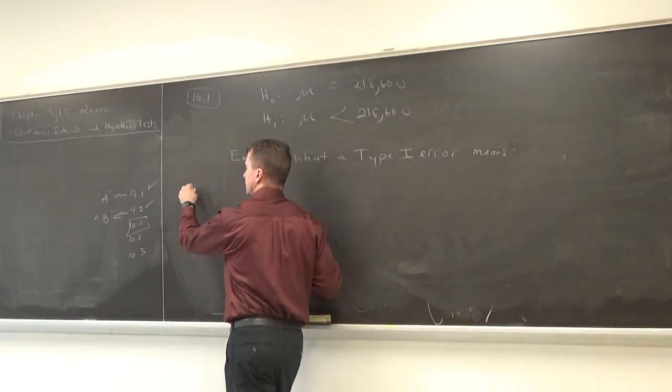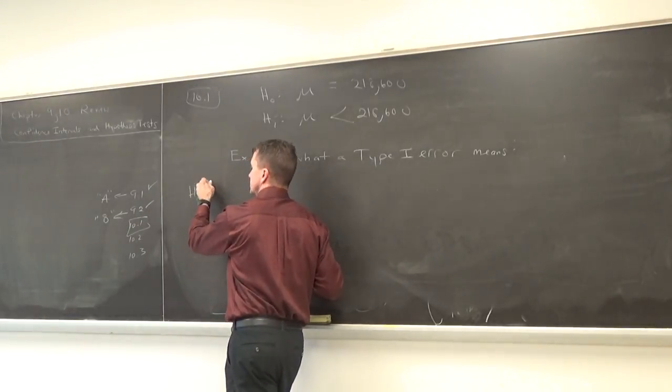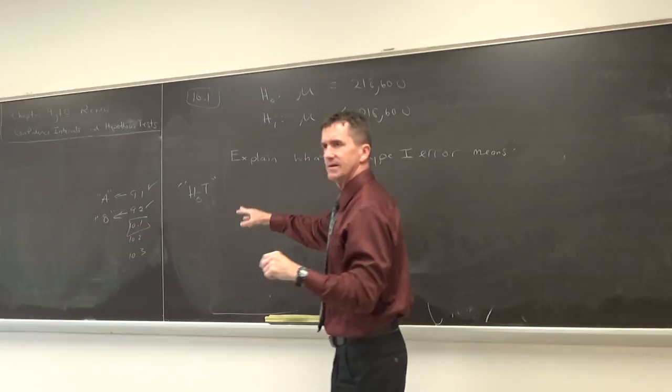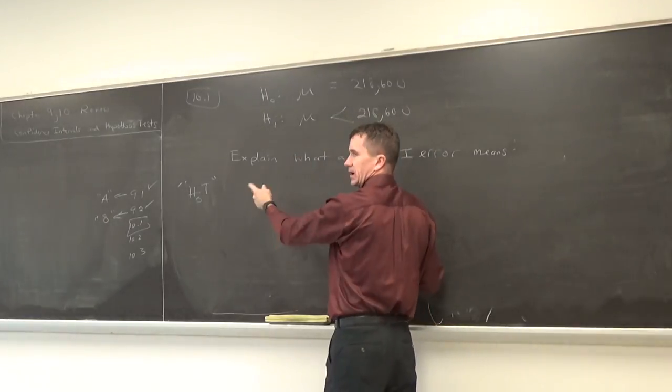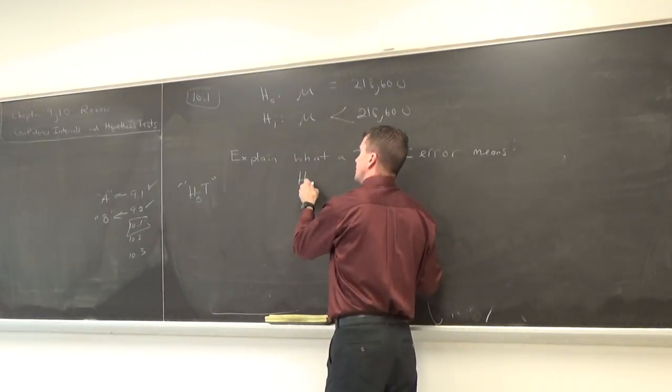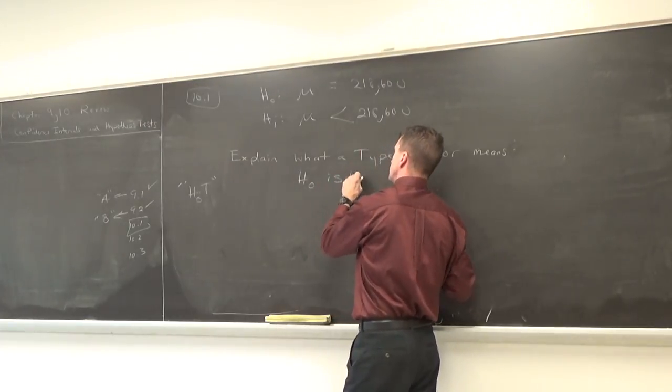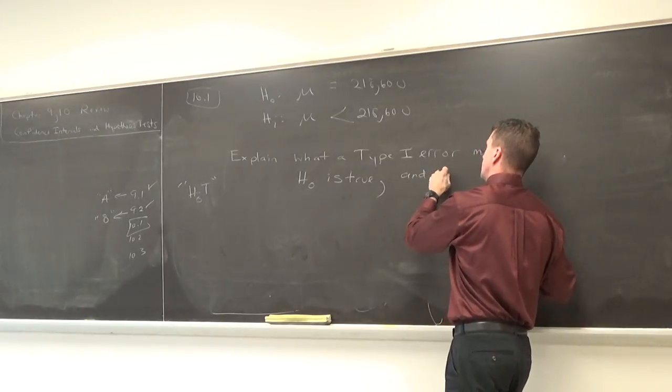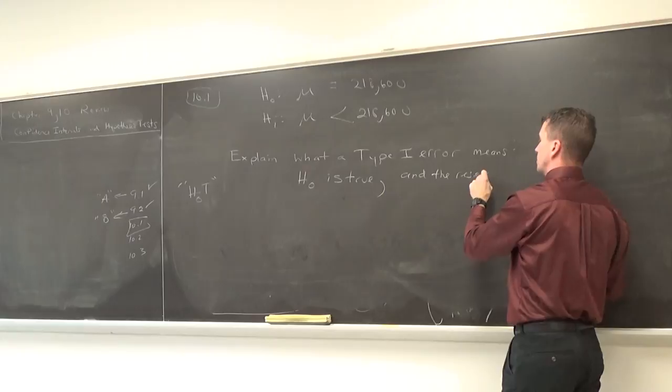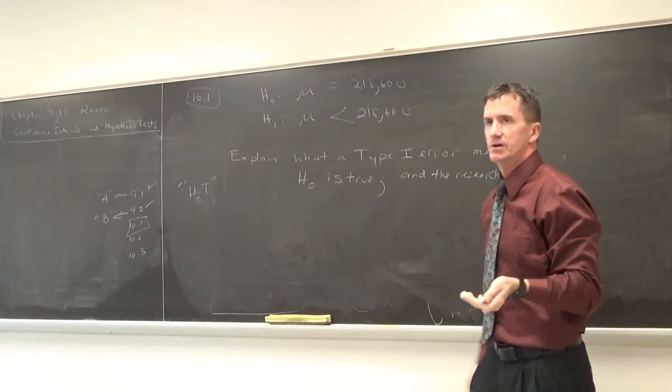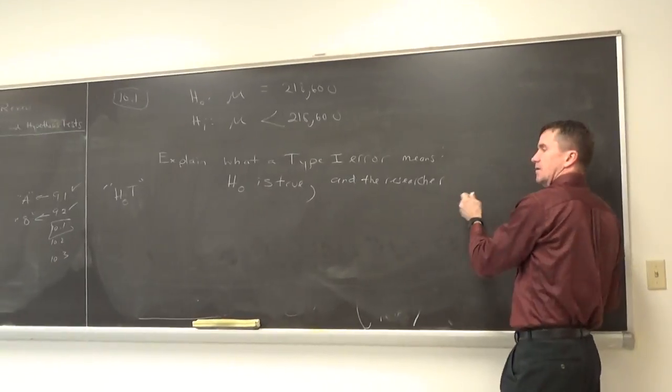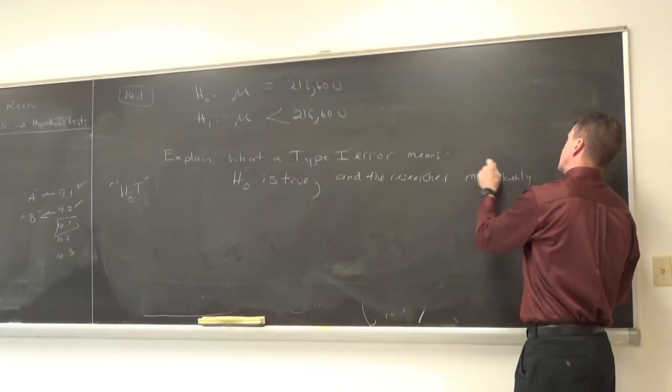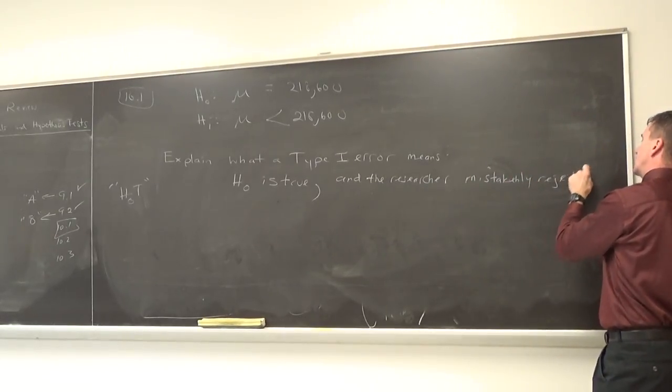Now I'm going to put a little phrase here. Hot. Has it been hot out lately? That's just my little phrase. Hot, just to help you remember this. Type one error. I've got to write this in words though. Hot, and I'm saying what does type one error mean? The null hypothesis is true. It's actually true. This is what Art was saying. And the researcher, in this case it was a real estate broker, but the researcher made a mistake when he did what? Rejects it. Done. That's what's going on. That's what it would mean to make a type one error.